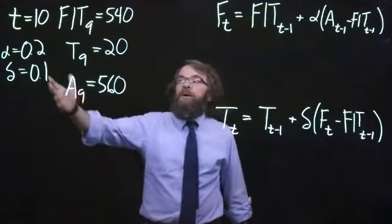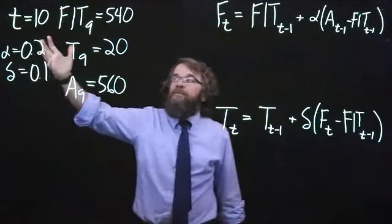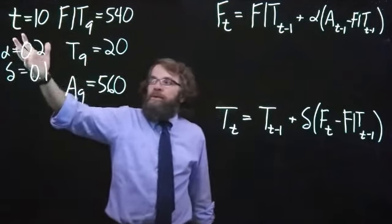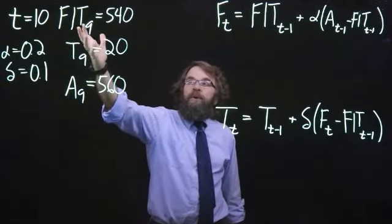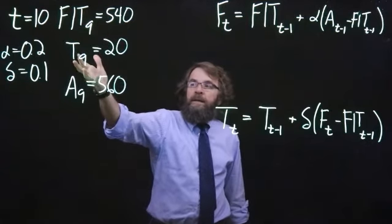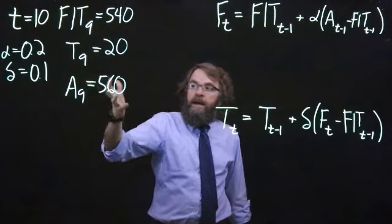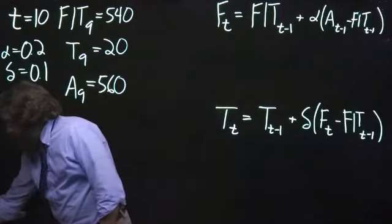For this example, we will say that it's currently period 10 that we need to make a forecast for. Alpha is 0.2, delta is 0.1. The forecast including the trend for the previous period, period 9, was 540. The current trend estimate is 20, and the actual in period 9 was 560.